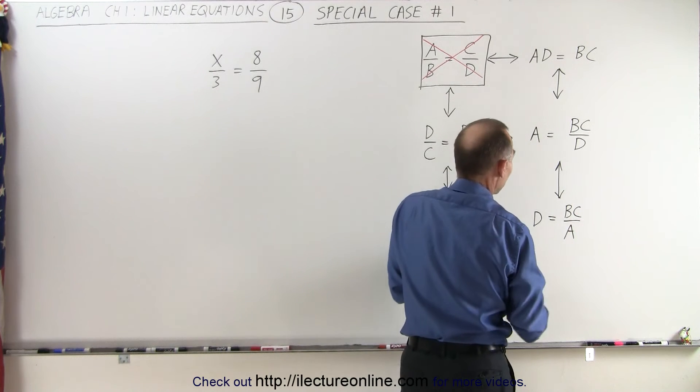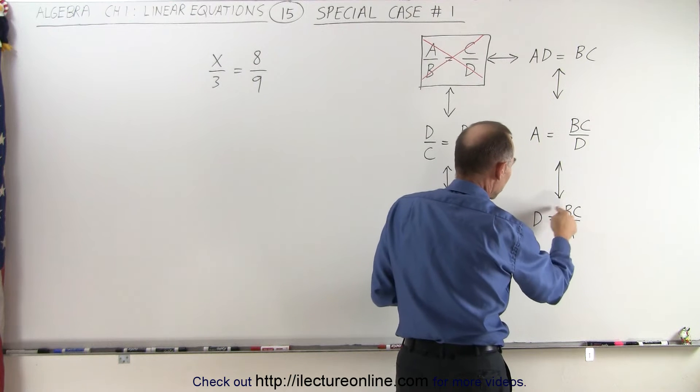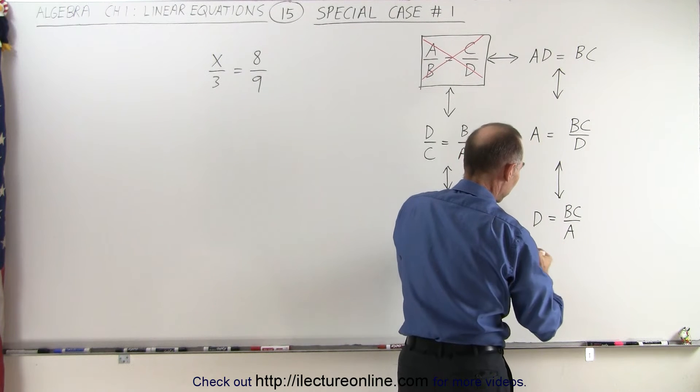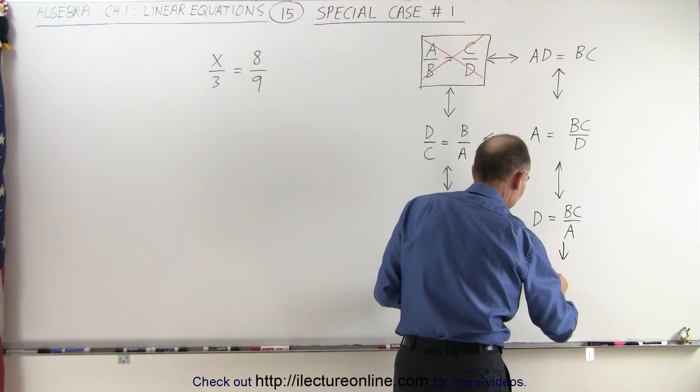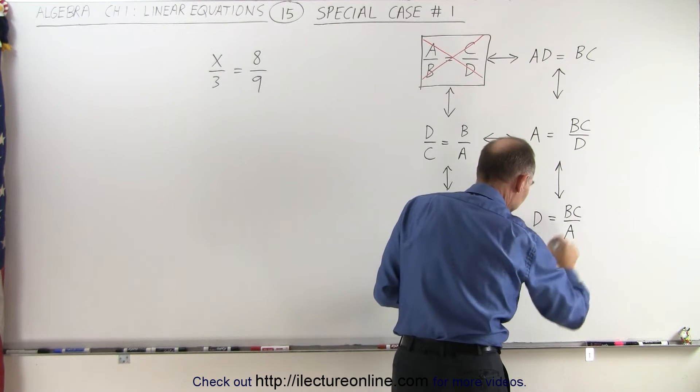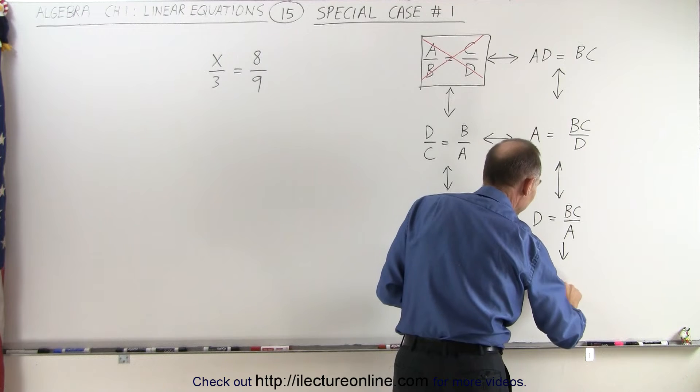Also, I can move everything over to one side. In other words, I can move the A up here and the BC down here. So I can also write this as AD in the numerator, divided by BC is equal to 1.